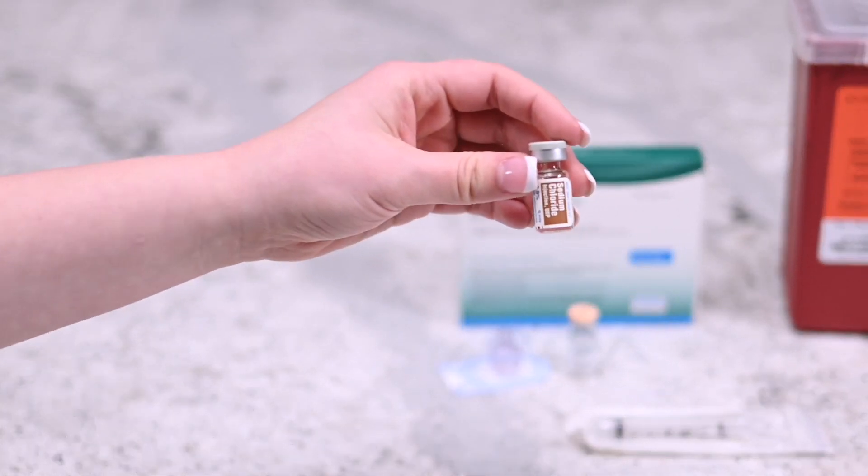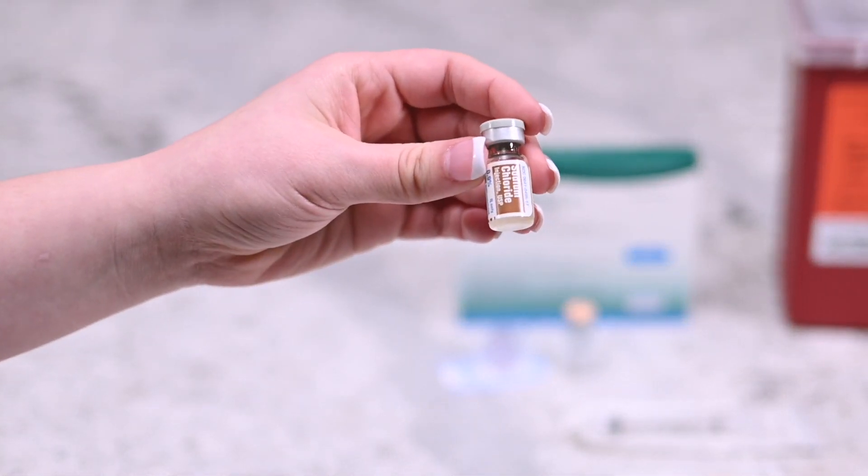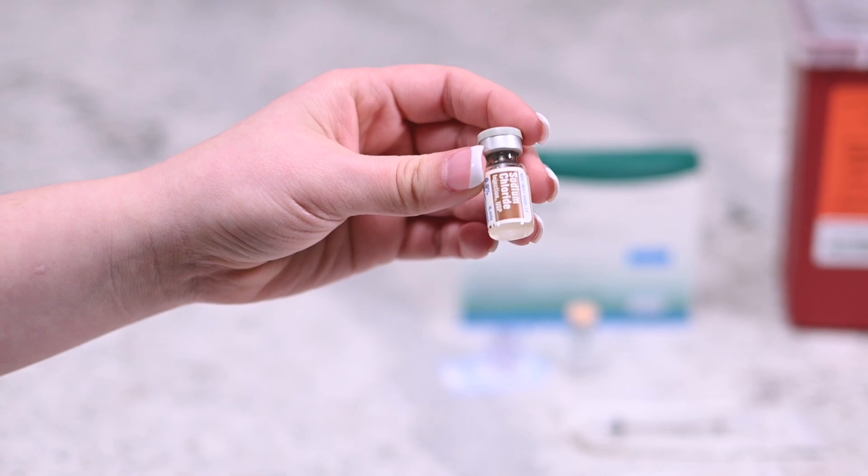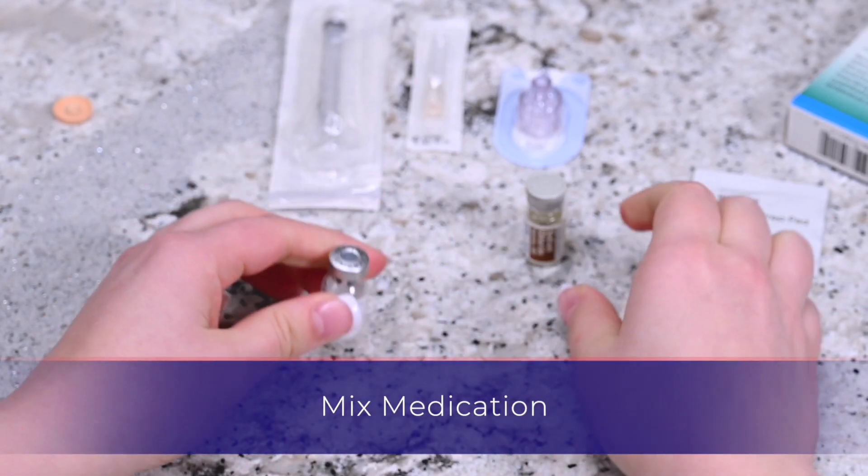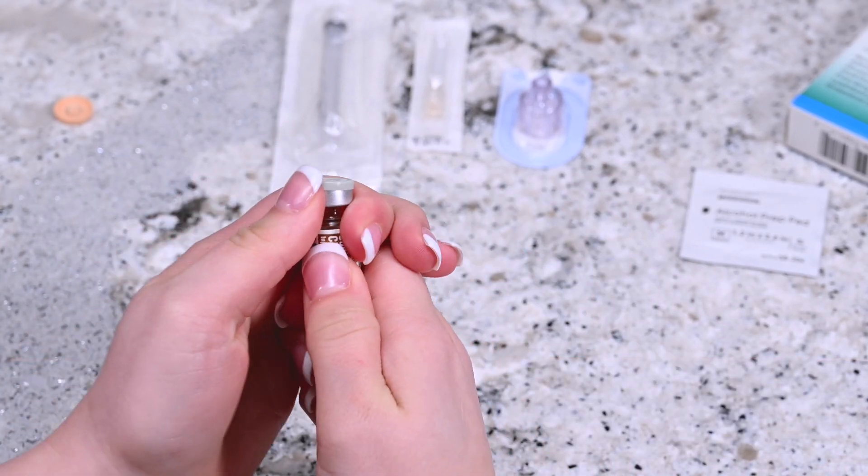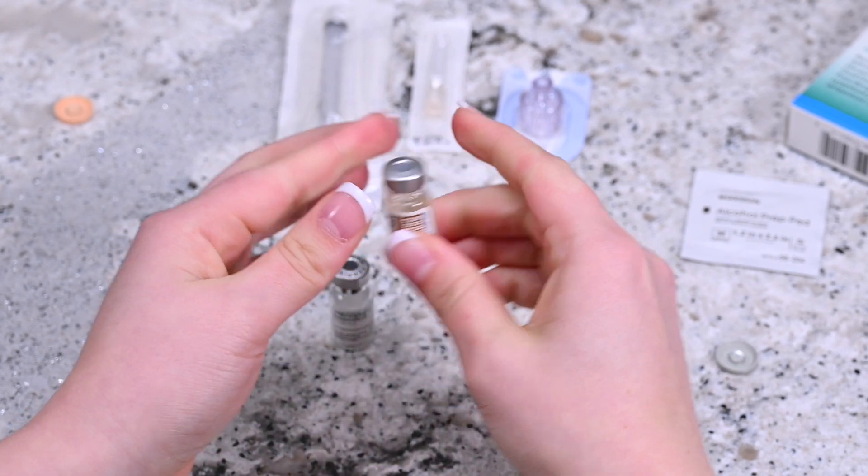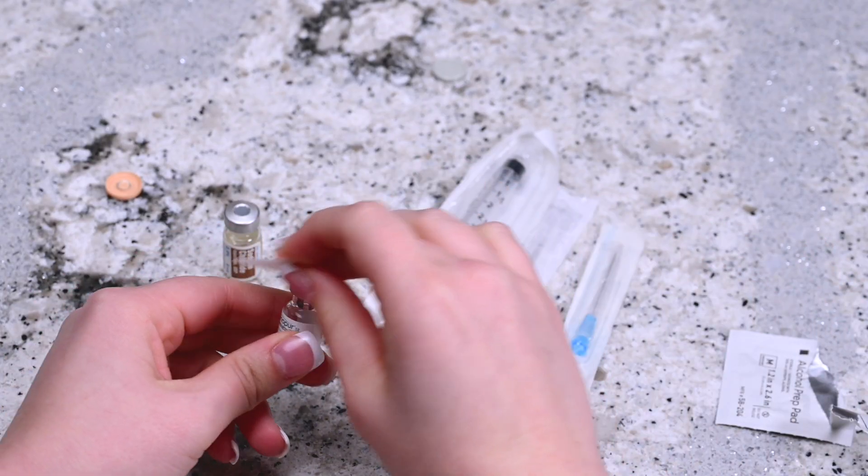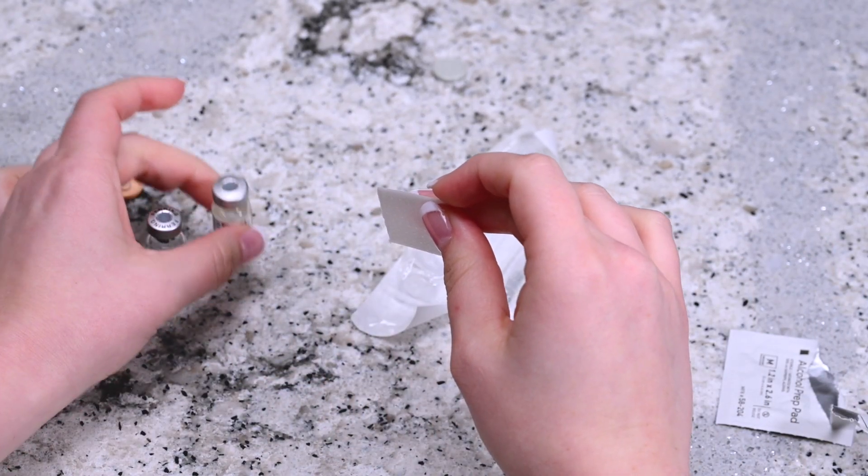Check to make sure that the vial of sterile diluent does not contain any free floating particles. Remove the cap from the vial of Menopur powder and the vial of sterile diluent. Disinfect the top of the vials with an alcohol prep wipe.